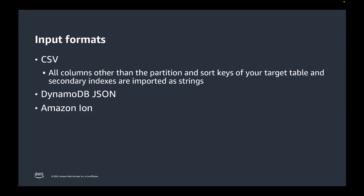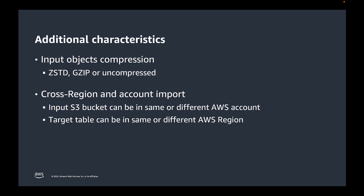You can import data that is stored in either CSV, DynamoDB JSON, or Amazon Ion formats. The only table attributes you define as part of the import job are the primary keys of the table and of the global secondary indexes. Keep in mind that if using CSV as the import format, where the input does not contain column types, any non-key attributes will be imported as strings. The import data can be compressed with standard GZIP or left uncompressed. Data can be imported from an S3 bucket in a different account and to a DynamoDB table in a different region. The only requirement is that the AWS role used for the process has the required permissions.